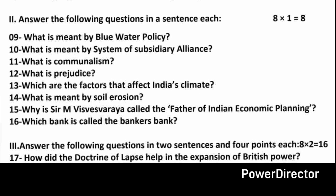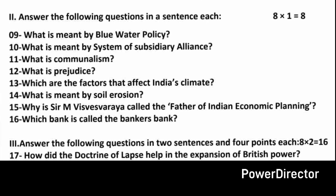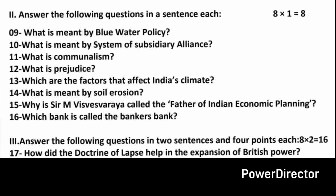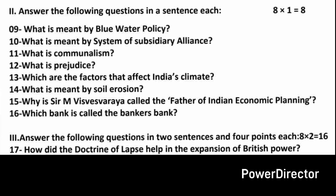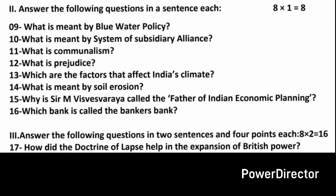States such as Satara, Jaipur, Sambalpur, Udaipur, Jhansi, and Nagpur came under the control of the British through the doctrine of lapse.